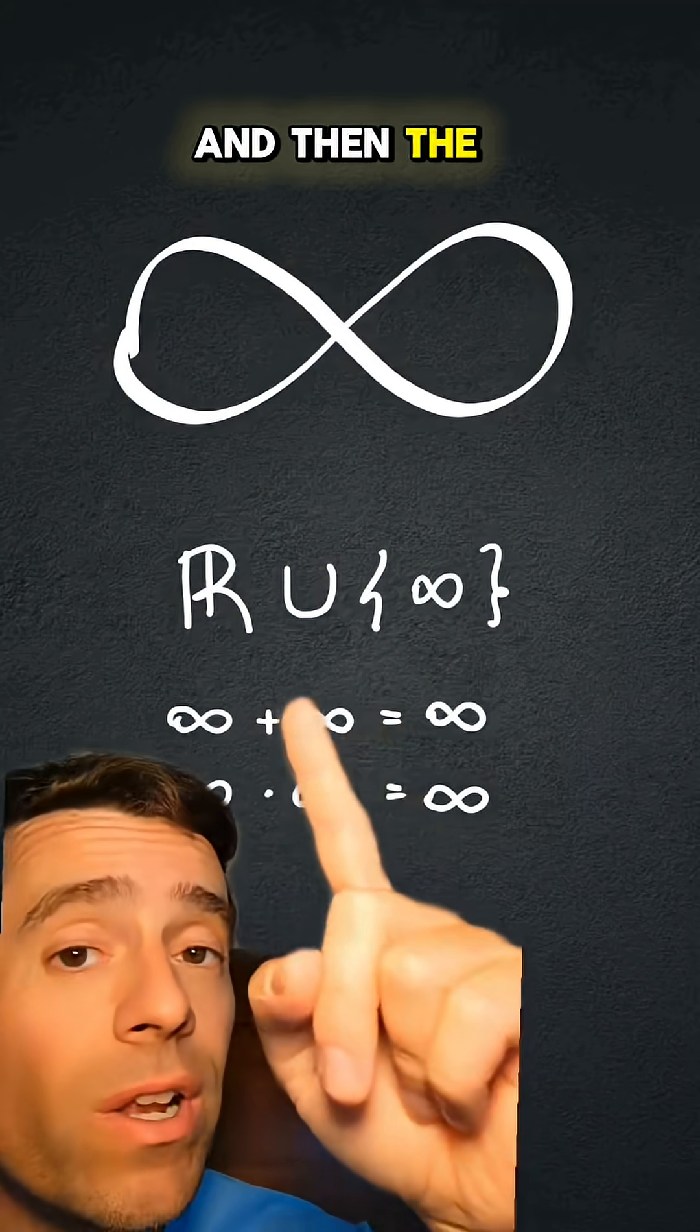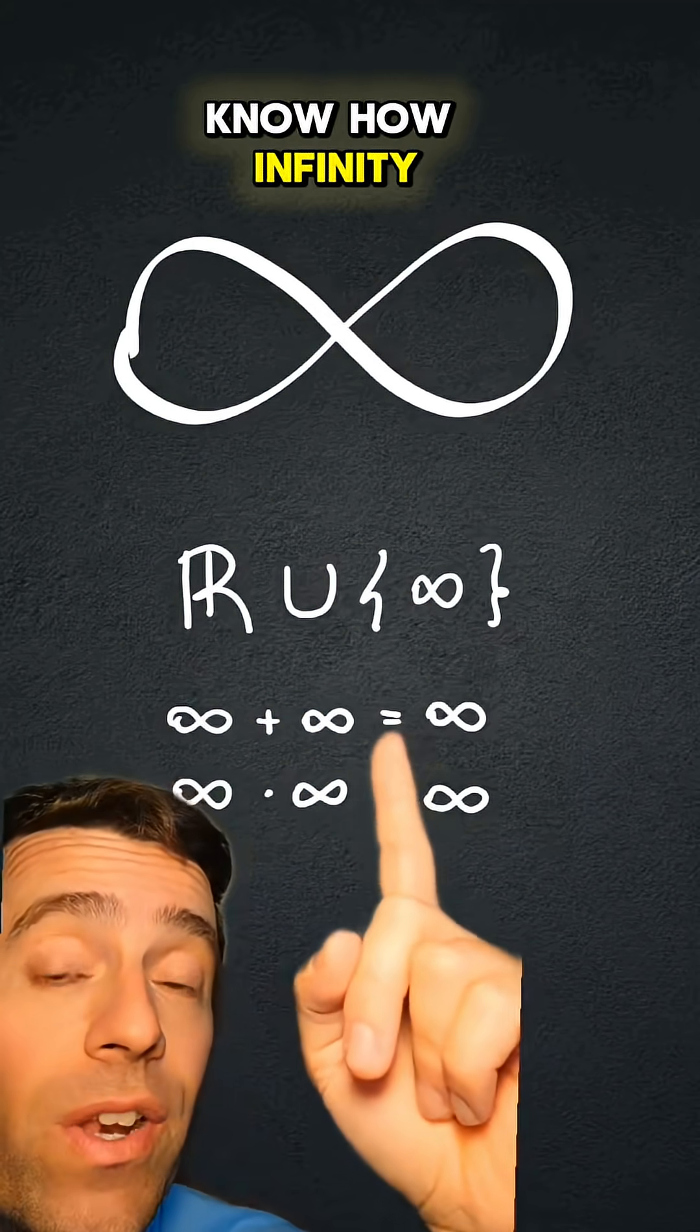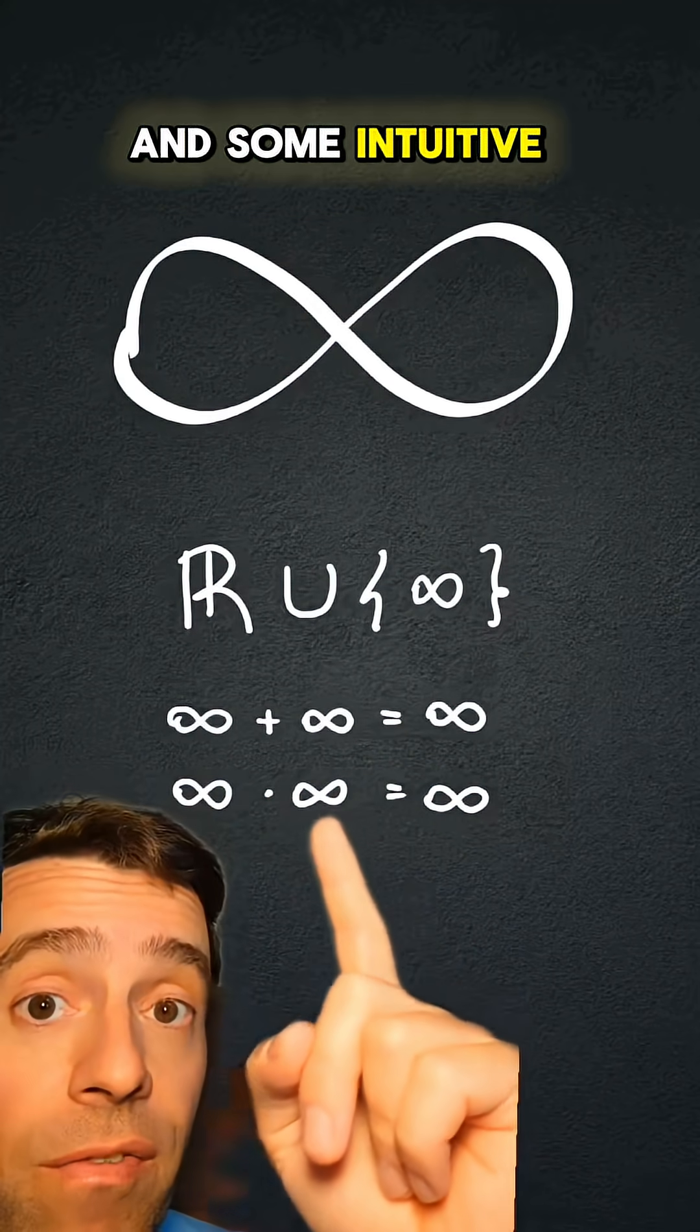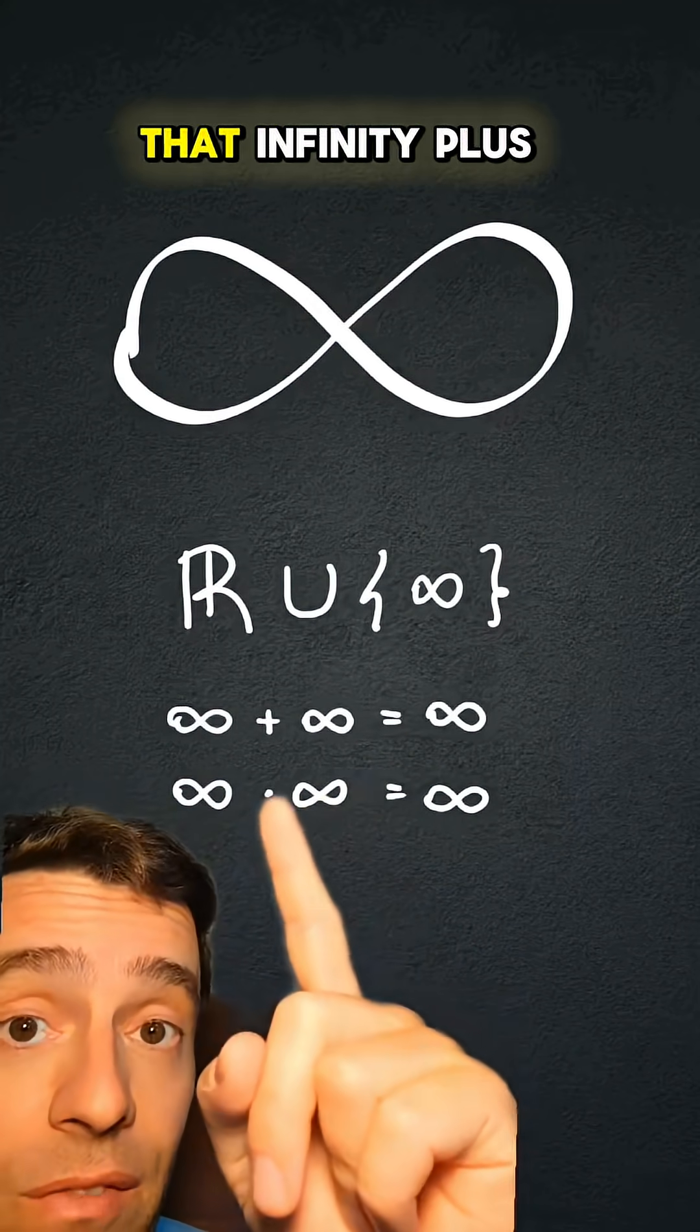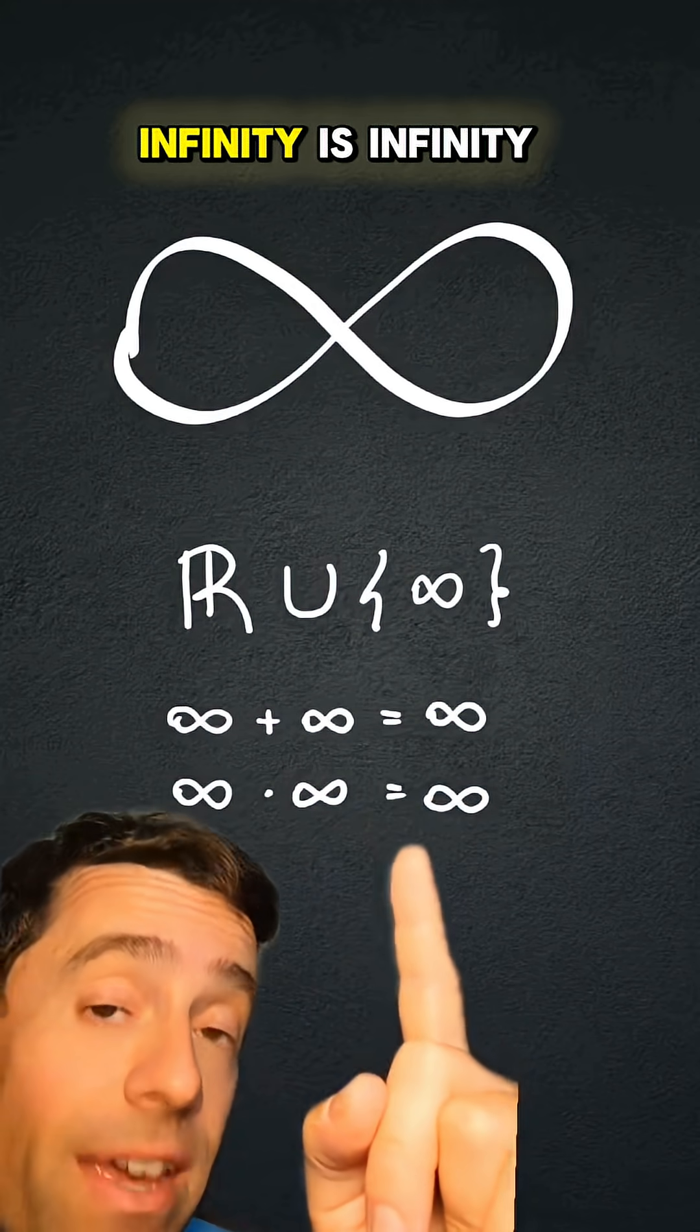And then the real numbers have an addition and a multiplication, so we have to know how infinity works under addition and multiplication. And some intuitive operations would be that infinity plus infinity is infinity, and infinity times infinity is infinity.